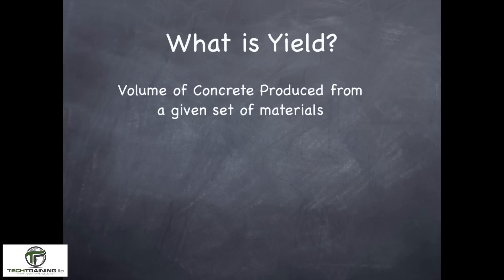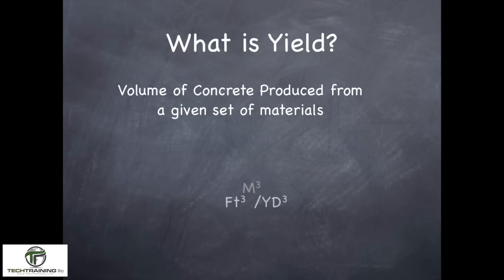Now yield is the volume of concrete produced from a given batch. You may have designed for one cubic yard, but did you actually get one cubic yard? So the yield is going to tell us that. The units here can change — we can have a yield in cubic feet, cubic yards, cubic meters, or cubic feet per cubic yard.